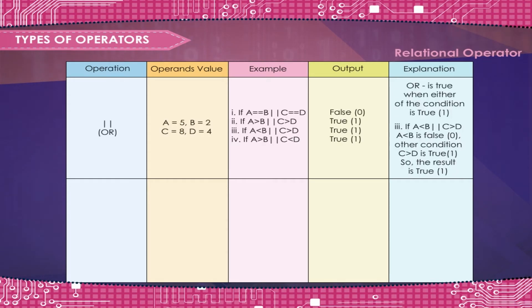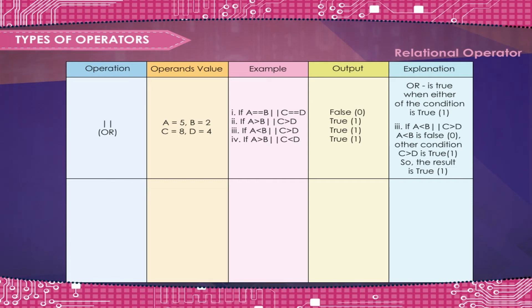Or: A is equal to 5, B is equal to 2, C is equal to 8, D is equal to 4. Example 1: If A is equal to B or C is equal to D — False, 0.